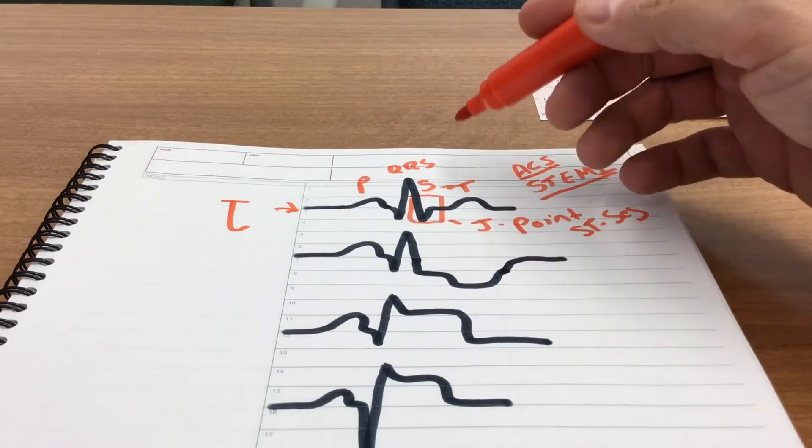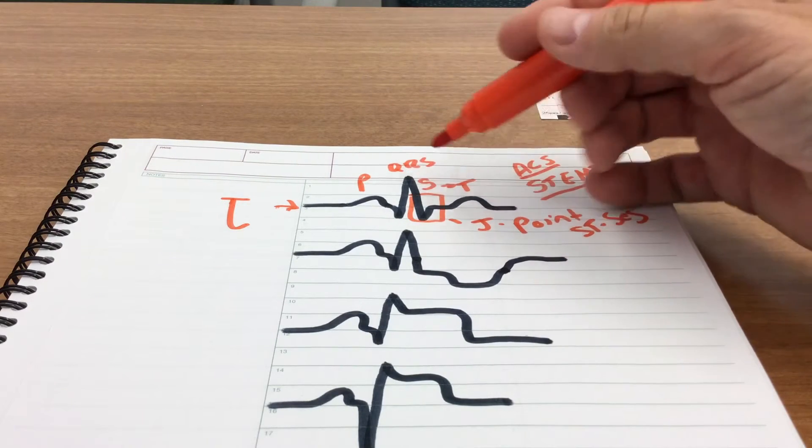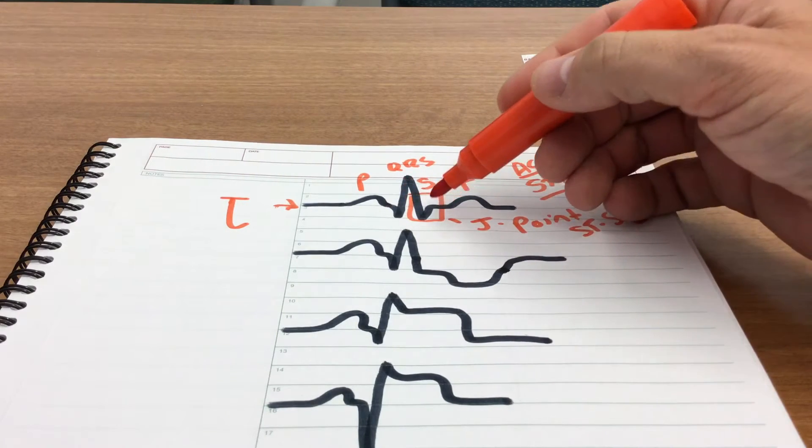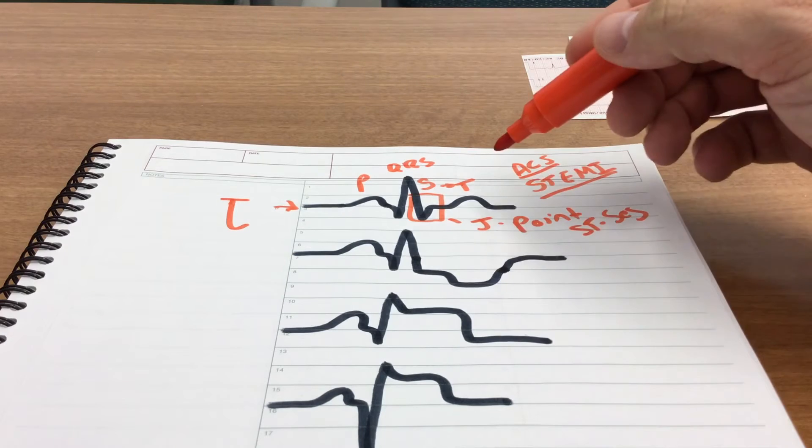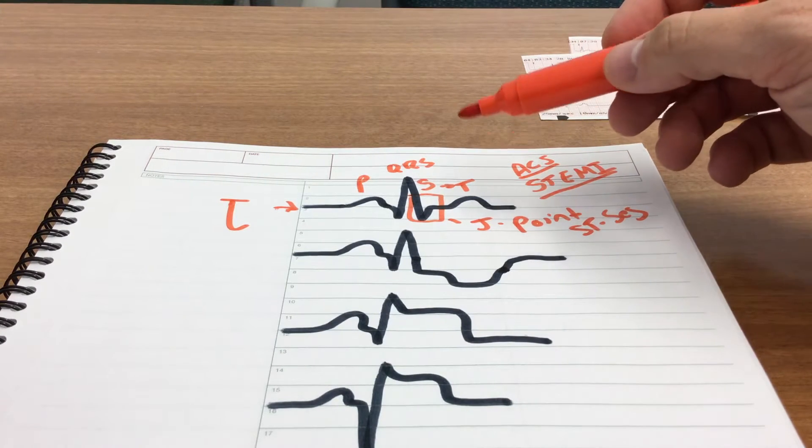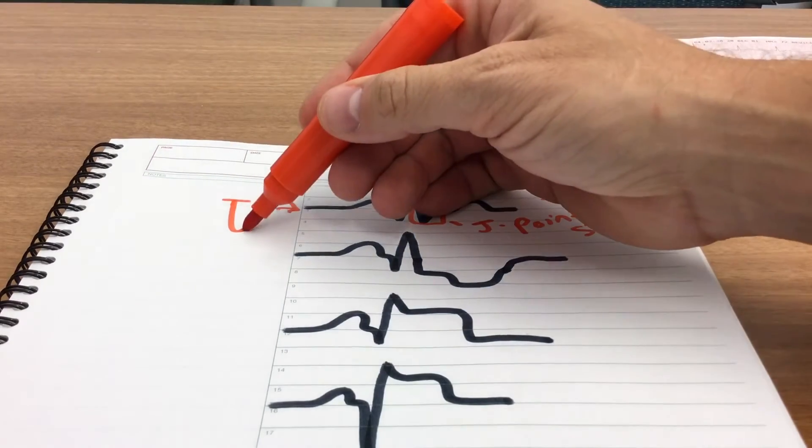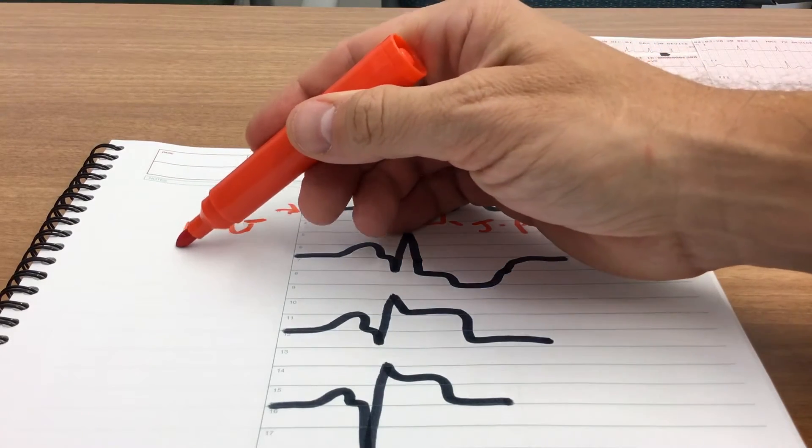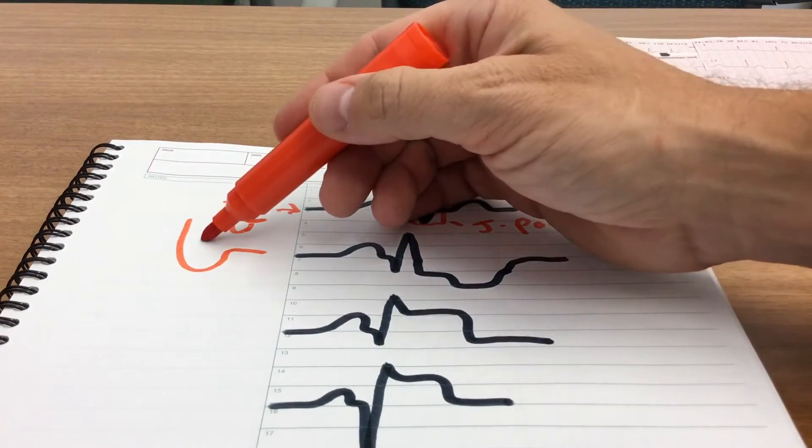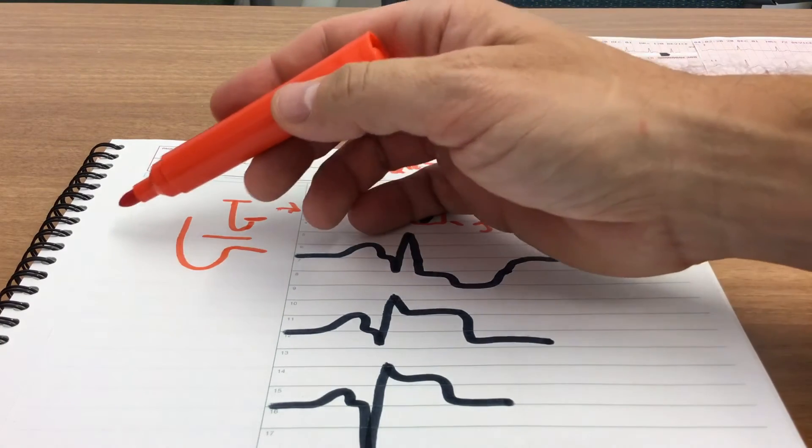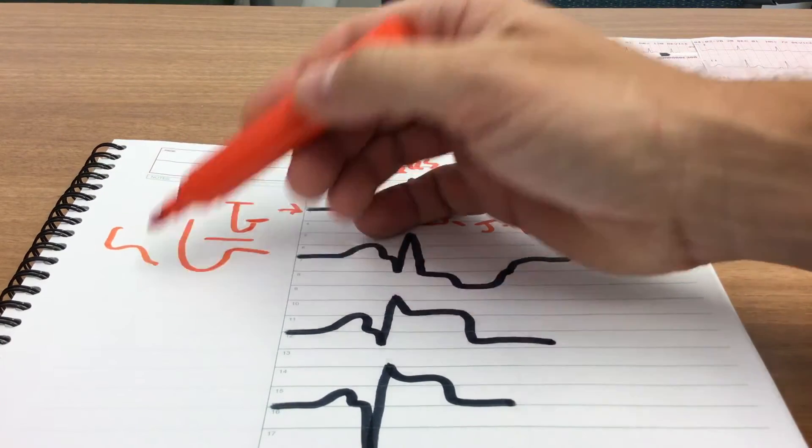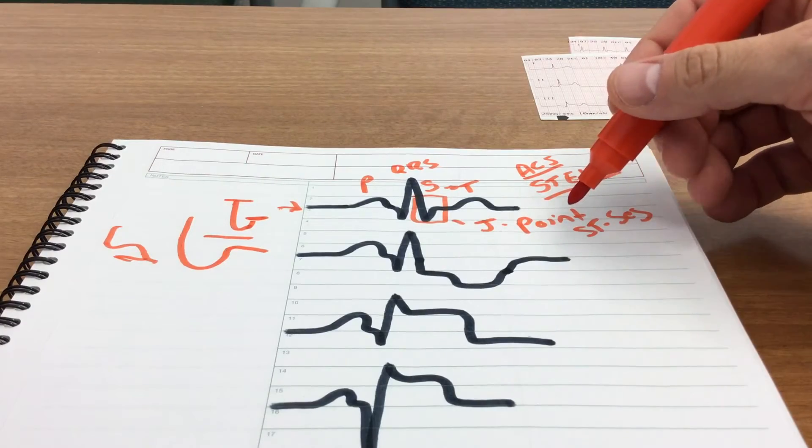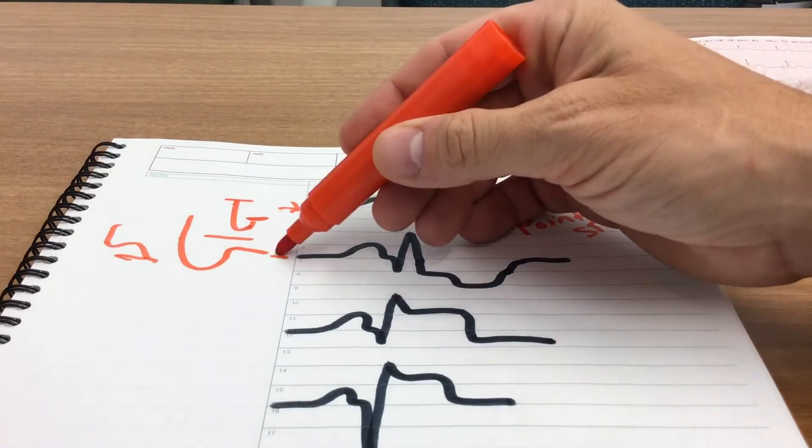What we should normally see in a normal PQRST complex is the S wave go down and then come back to baseline. You have your isoelectric line, you come back to baseline, and then you have the T wave. When that does not happen, the J point can either go below the baseline or the J point can terminate above the baseline.